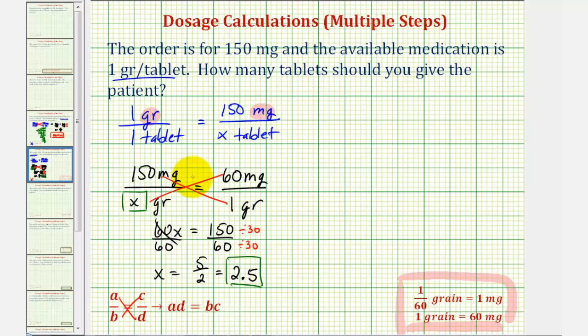So now we can substitute 2.5 grains here for 150 milligrams, and then solve the original proportion. We're going to go ahead and rewrite this as one grain to one tablet equals, again, 2.5 grains.